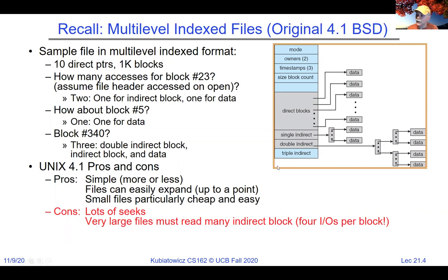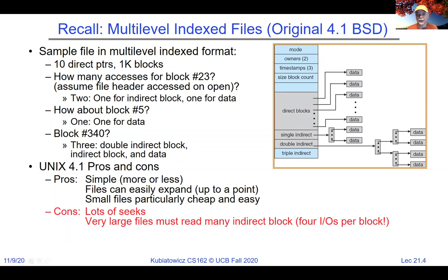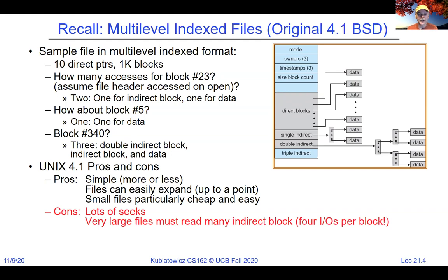When reading a file, the file description you get from open keeps track of your offset in the file. Once you know the offset (which byte you're on), you divide by the block size to get the block number, and it's a direct mapping. The next byte pointer is kept in the open file description. You can look back to lectures from about a month ago where we talked about that in more detail.